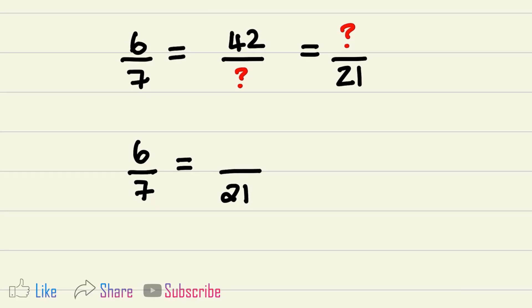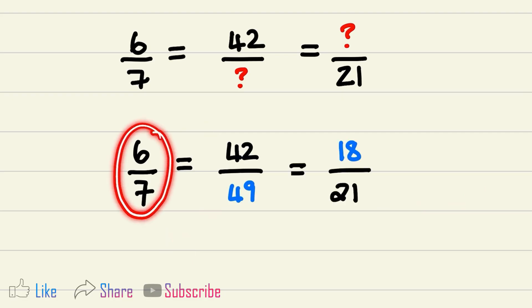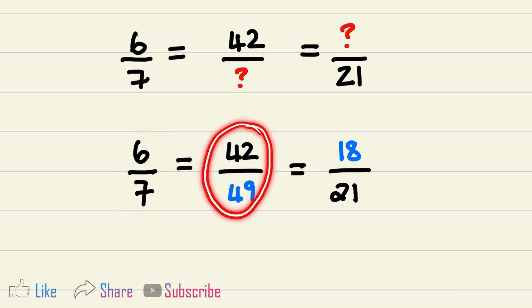Now let's see how much we need to multiply 7 by to get to 21. So I need to multiply 7 by 3, because 7 multiplied by 3 is equal to 21. And I do that same calculation in the numerator, so 6 multiplied by 3, which is equal to 18. So 6 over 7 is equal to 42 over 49 and also equal to 18 over 21.